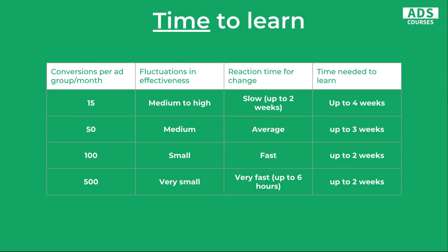For example, if you're generating only about 15 conversions per ad group per month, the fluctuation in effectiveness will be medium to high, the reaction time to market changes will be slow — up to two weeks — and the time needed to learn will be up to four weeks. But if you have about 500 conversions per ad group per month, that's a lot of data. The fluctuation in effectiveness will be very small, the reaction time will be very fast — up to six hours — and the time needed to learn will be up to two weeks, which is the default time machine learning needs to stabilize.